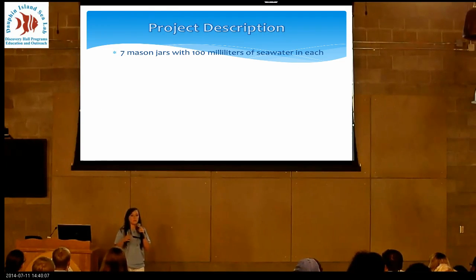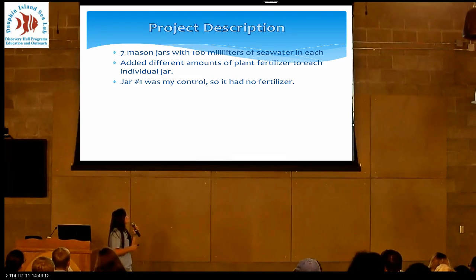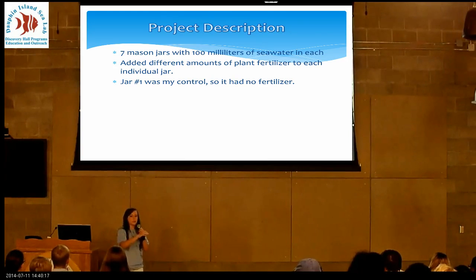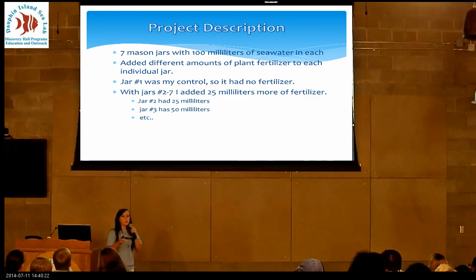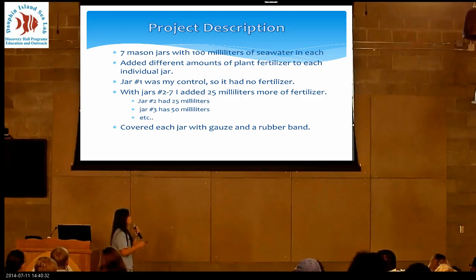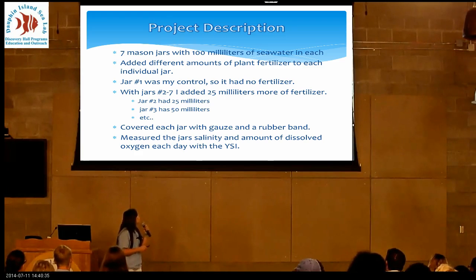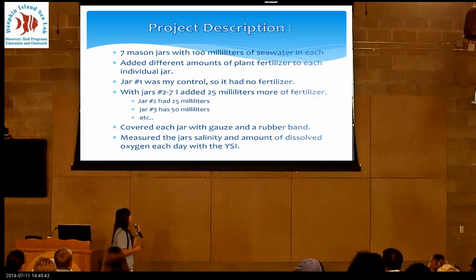I filled them all with 100 milliliters of regular seawater from the Gulf and then added different amounts of fertilizer to each one. Jar number one had none — it was my control, the one I compared all other measurements to. Jar number two had 25 milliliters, jar number three had 50, and so on. I covered each jar with gauze and a rubber band and let it sit for a couple of days, then started a trial where every day for five days I measured the dissolved oxygen in each jar with the YSI.